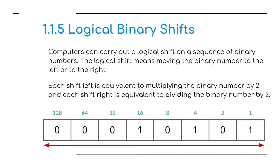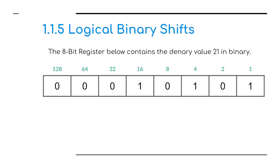Logical binary shifts, section 1.1.5. We're going to use this technique to shift numbers left and right in a register. In this case, we're going to be multiplying or dividing bytes of information. If we shift the 1s and 0s to the left, we would be multiplying. And if we shift them to the right, going down the register, we would be dividing by 2.